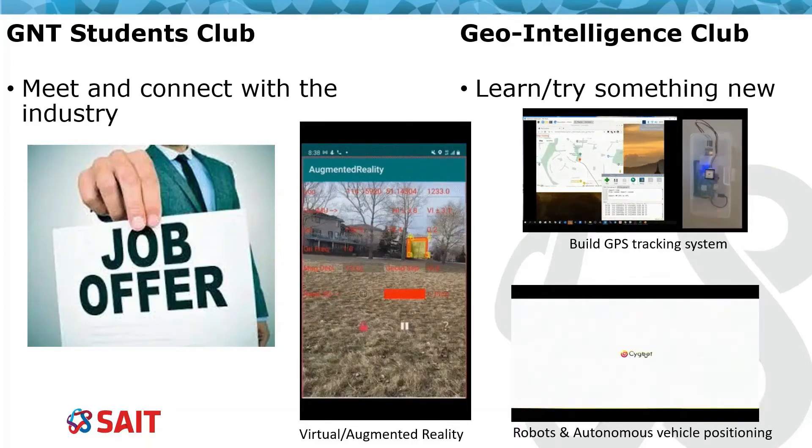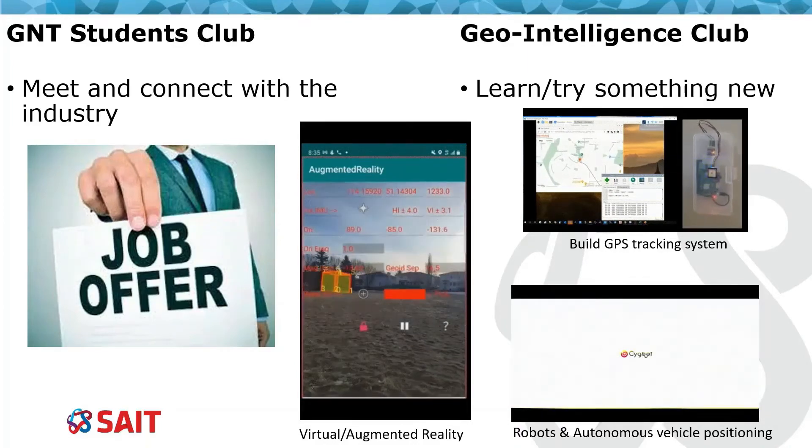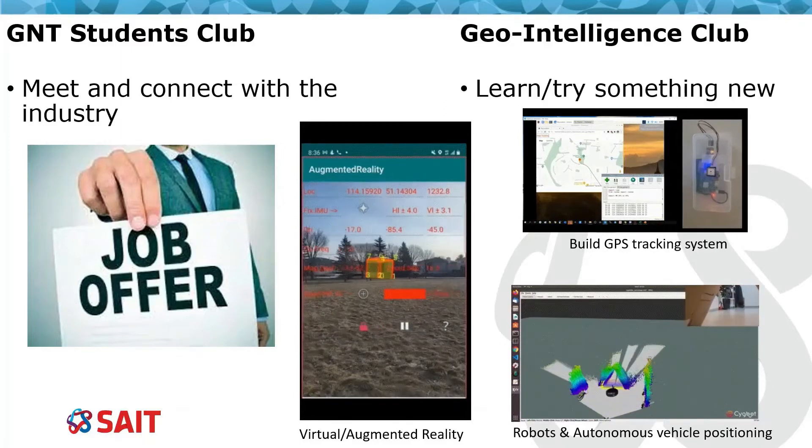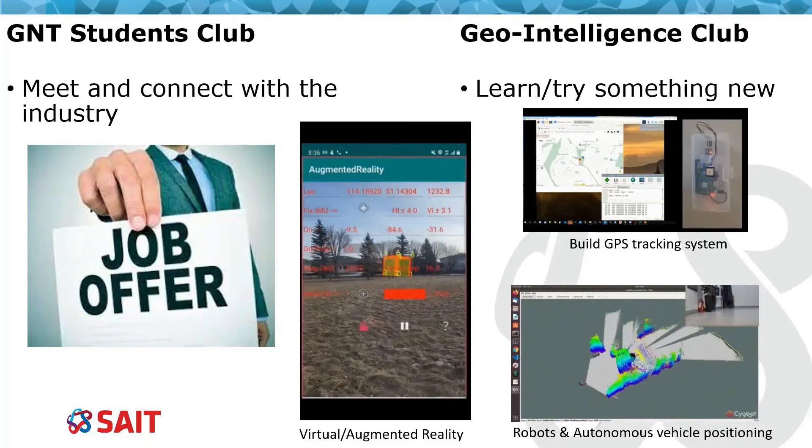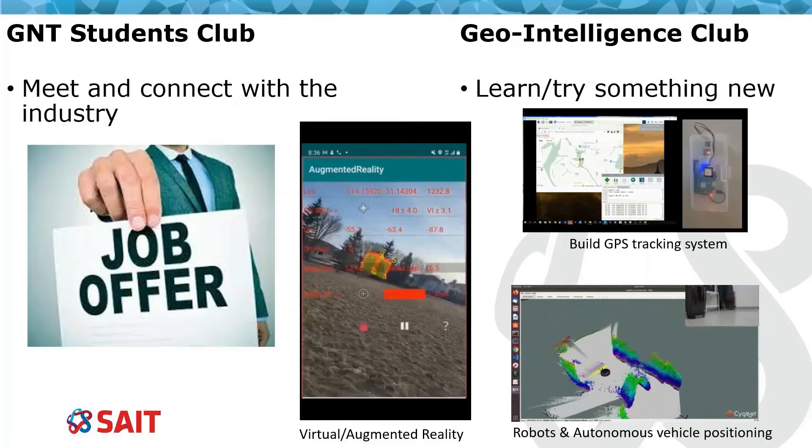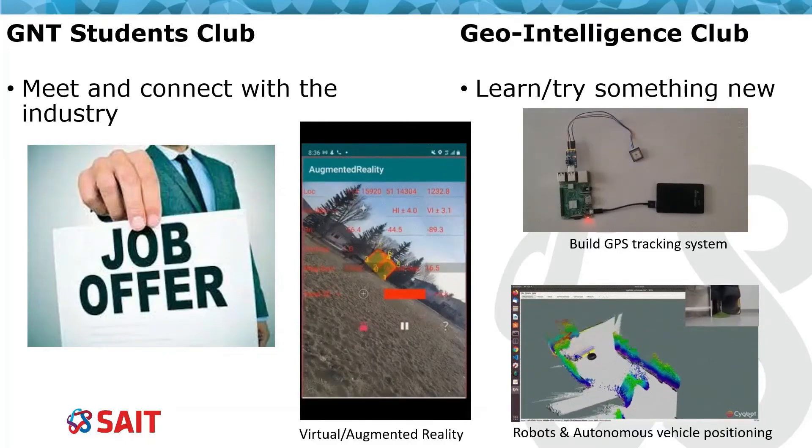Example projects include creating GPS tracking systems, virtual augmented reality, robotics, autonomous positioning. These are in fact geomatics applications but they also tie to the world of AI.